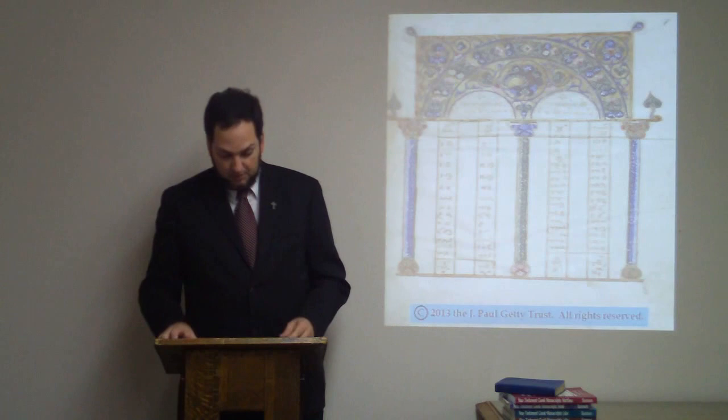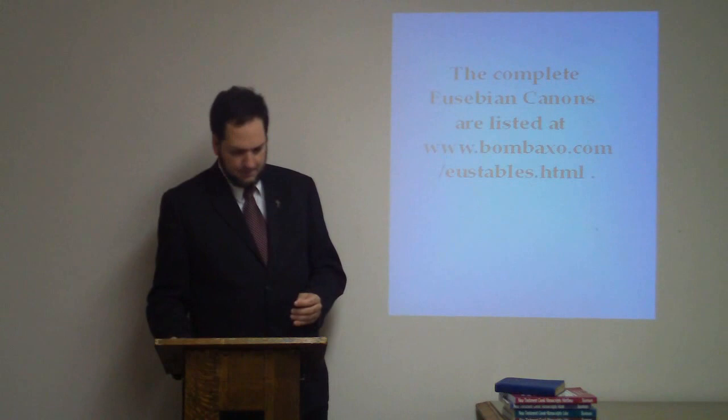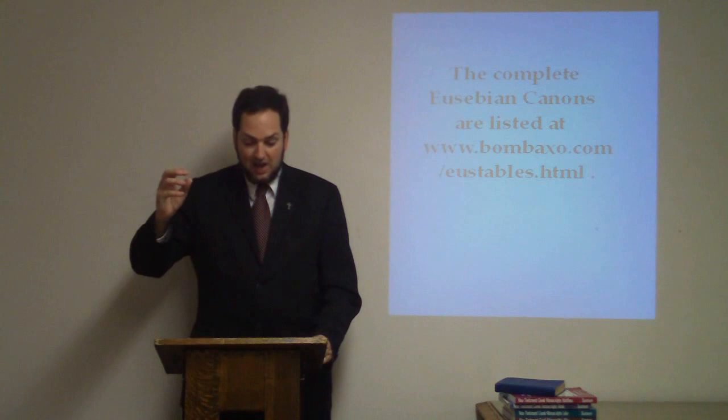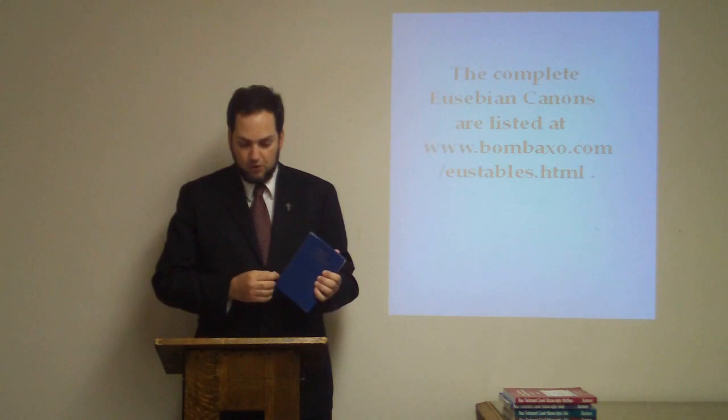But they do achieve something else. They do what Eusebius designed them to do: they provide a cross-reference system for the four Gospels. In order for Eusebius' cross-reference system to work, the correct section numbers and canon numbers need to be placed alongside each section throughout the text of all four Gospels. And if you have a Nestle-Aland text, you can find these section numbers and canon numbers in the inner margin of the text of the Gospels. Chapter numbers are there too, in italics.